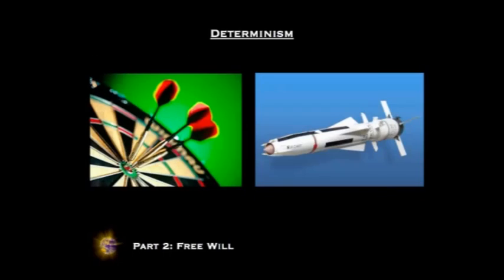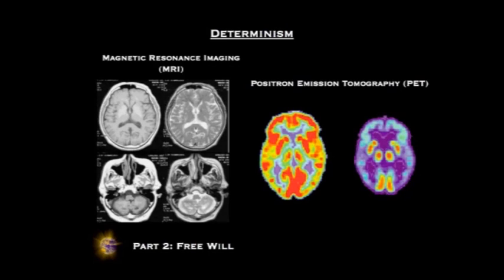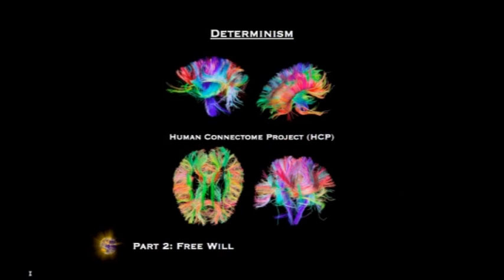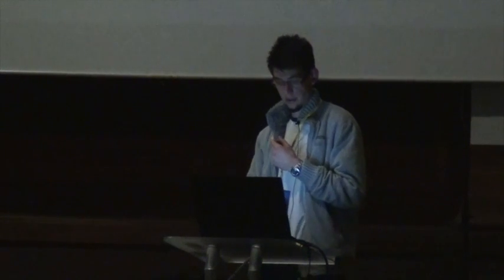The same application of knowledge has allowed us to develop technology by observing predictable patterns using the scientific method. If we knew all the information about the dart's launch, along with complete knowledge of physics, we could calculate exactly where it would land — and even engineer a dart that always hits the bullseye. Rapid advances in neuroscience and brain-imaging technology, such as MRI and PET scanning, are giving us an increasingly accurate map of the brain. Perhaps one of the most ambitious projects is the Human Connectome Project, which aims to map all the neural connections and pathways in the brain. If we understood all those connections and had an intimate knowledge of their causal relationships, could we not predict the behaviour of individual neurons, or even the whole brain?